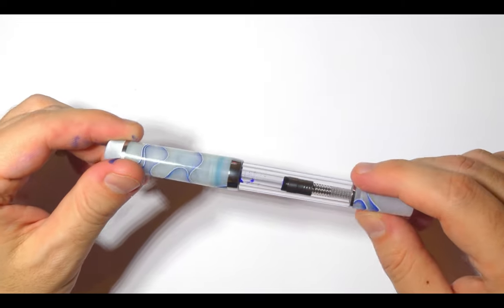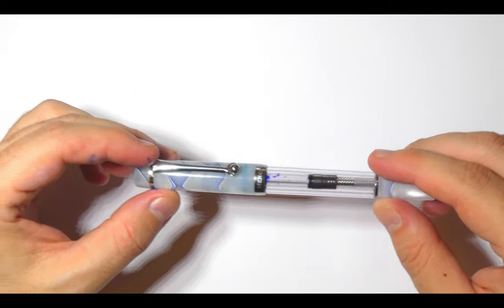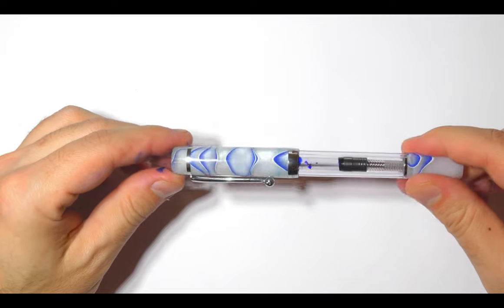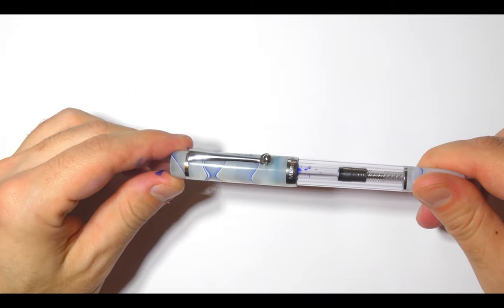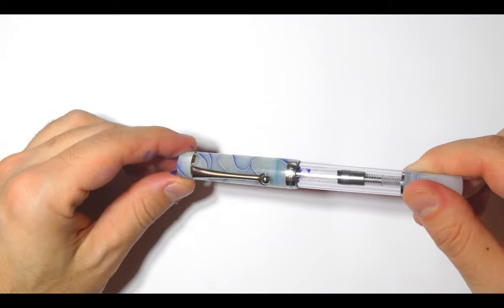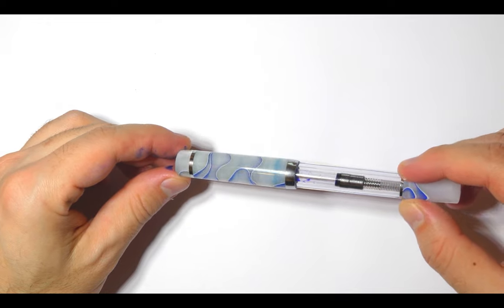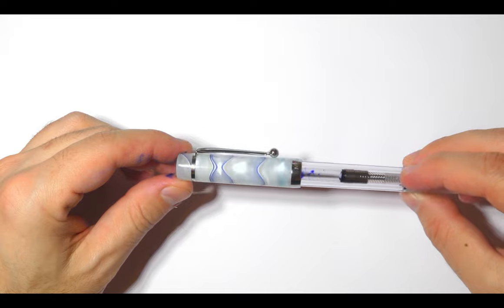This pen is a part of a range of pens called planets and this particular pen is named after the smallest planet in our solar system, Mercury indeed. The acrylic on the cap is fascinating with its blue and white waves showing a lot of pearlescence and chatoyance.